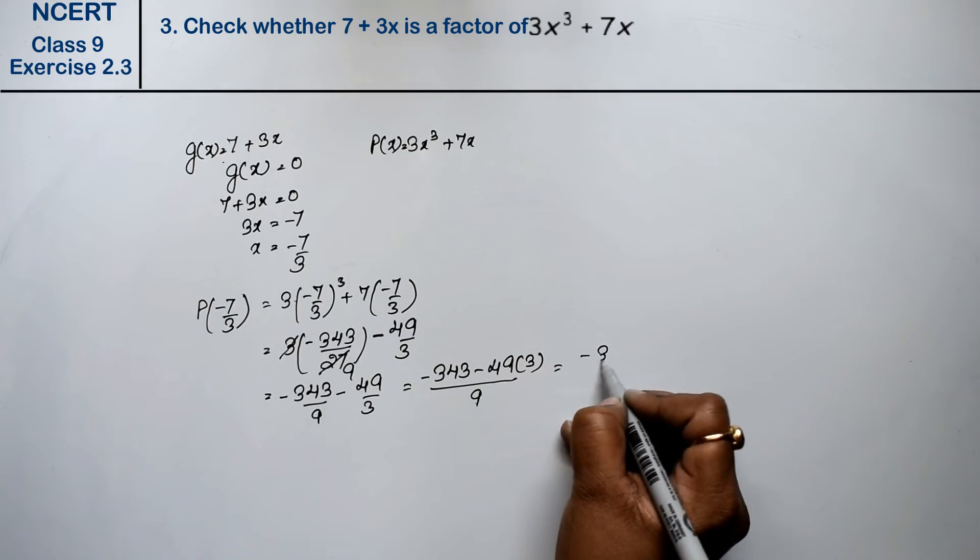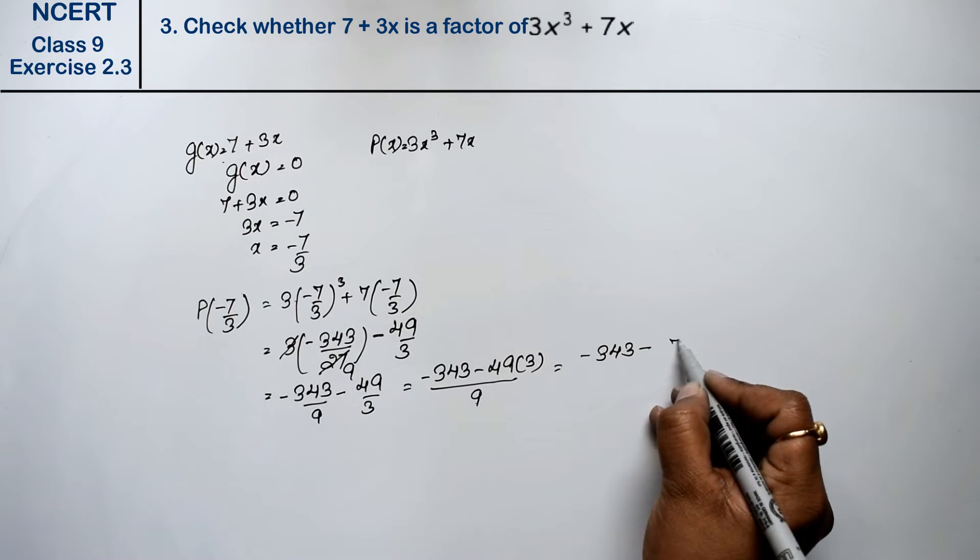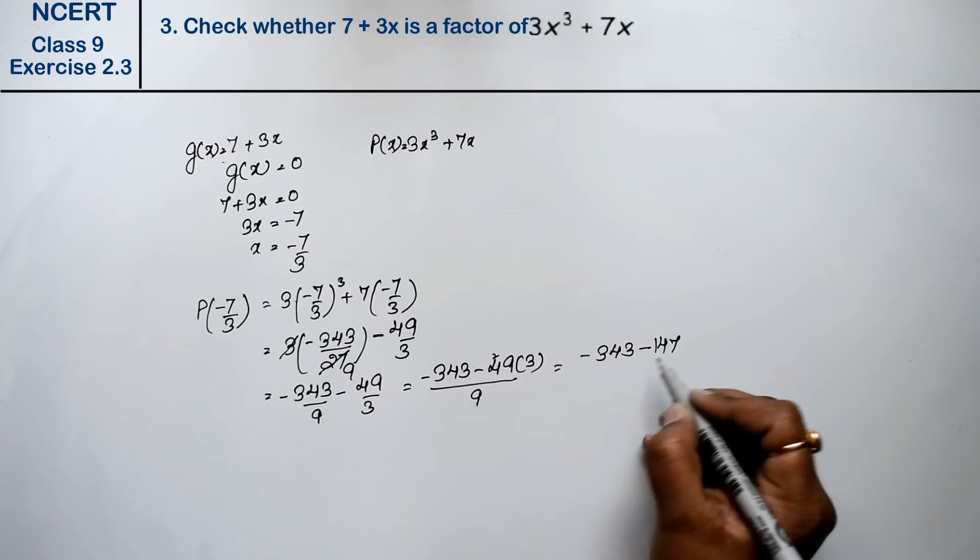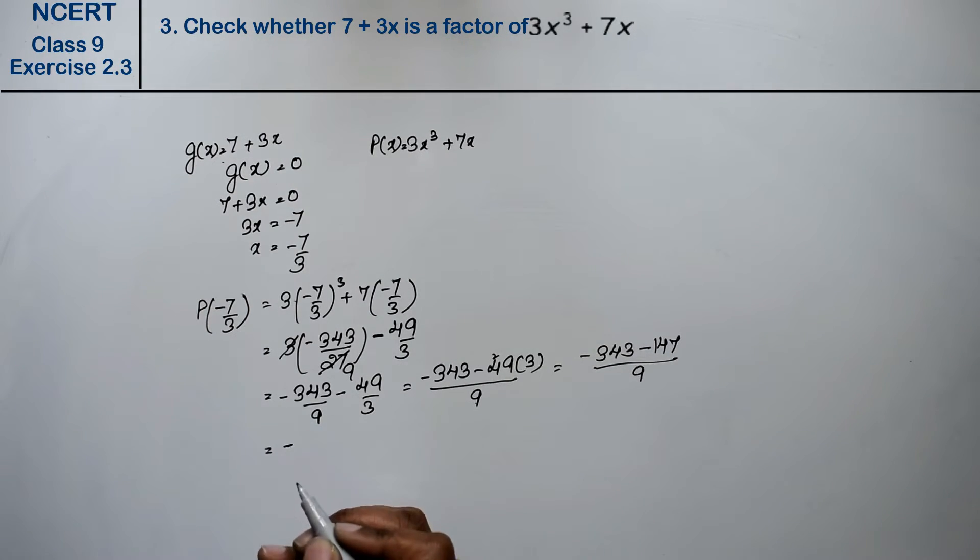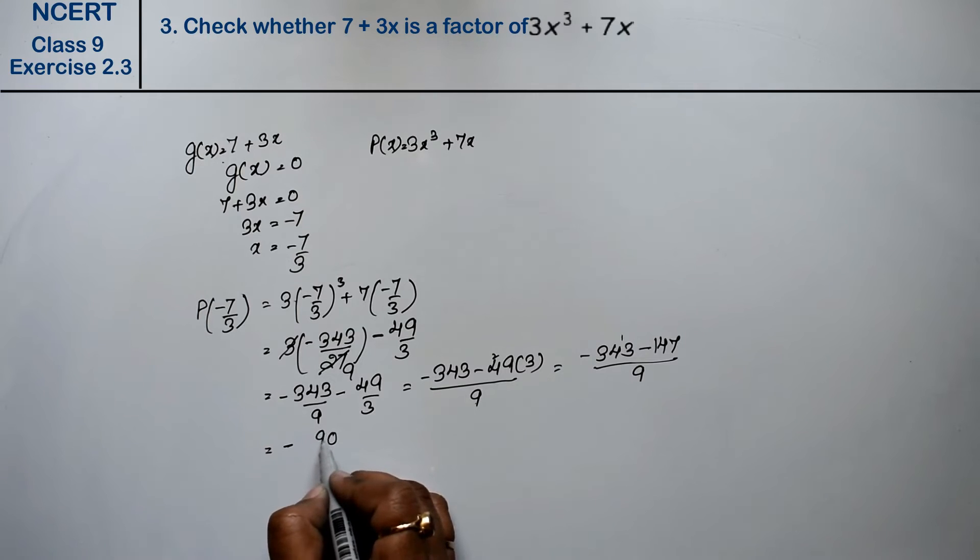So this becomes minus 343 minus 3 nines are 27 to carry 12, 13, 147 upon 9. So what did we get? Both negatives will add together. 7 and 3 is 10 carry 1, 8 and 9 and 4. 490 upon 9.